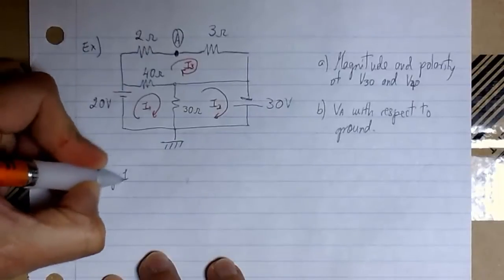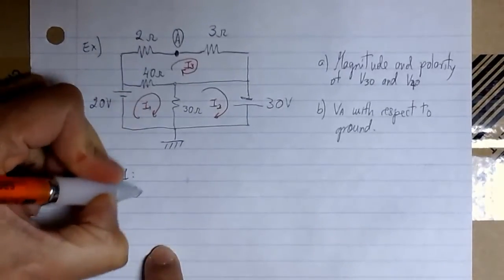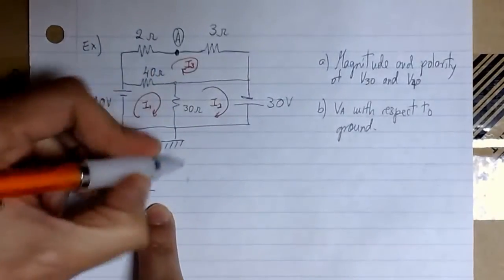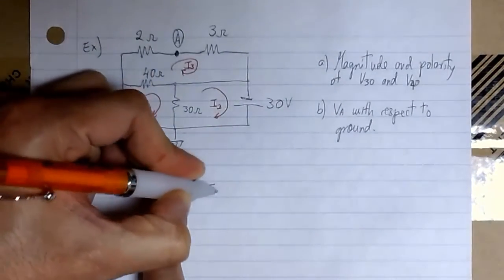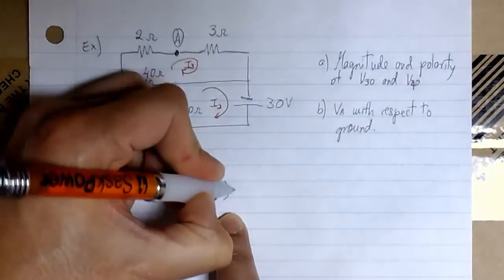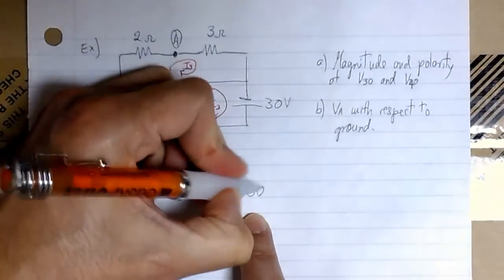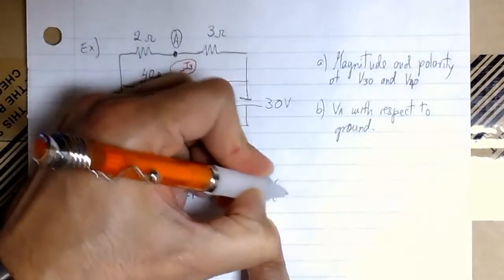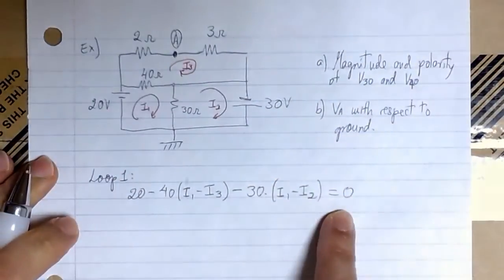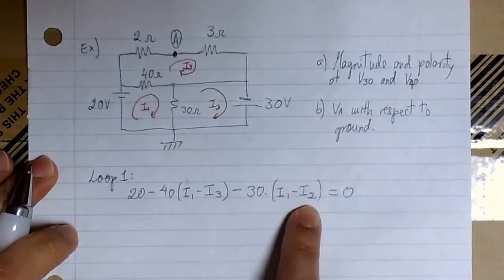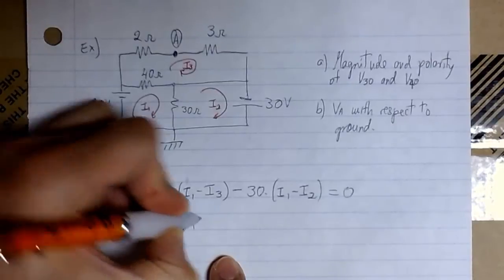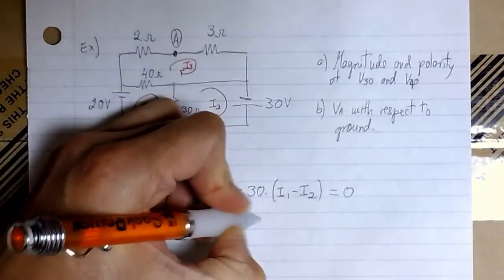We start with loop 1. Loop 1 has one source and two resistors. We have 20 volts minus the first drop across the 40 ohm resistor — the current through 40 is I1 minus I3, because I1 and I3 flow in opposite directions — minus the drop across 30, where the current through 30 is I1 minus I2. This summation equals zero. Rewriting gives us equation 1.